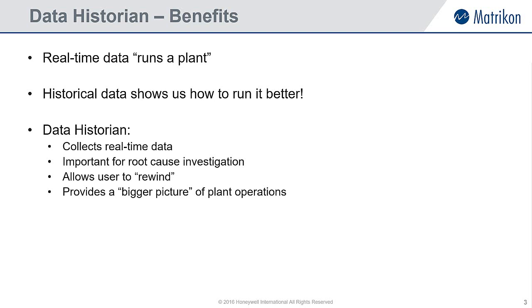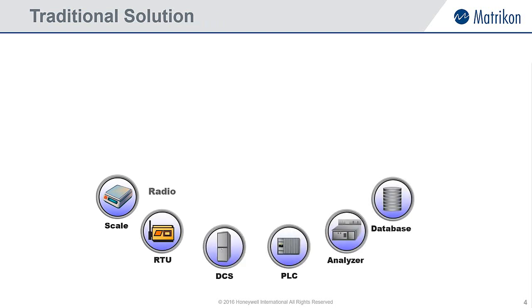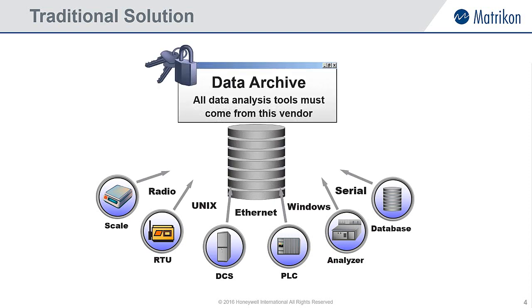Now that we've covered the importance of archiving our data, let's take a look at some of the available solutions. Here is an example of a traditional plant historian. Real-time data is collected from the various devices into the historian where that data is archived. Although this model works, one of the major downsides is that the data is locked up by the vendor of the historian, and in many cases can only be accessed by using the vendor-supplied tools. Customers got frustrated with this restriction — there had to be a better way. And this leads us on to the OPC-based solution.